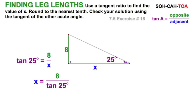So, normally we'd say we're done, but look at the next sentence. Check your solution using the tangent of the other acute angle. Well, that's this one right here. Well, the other acute angle, we know, is 65. Triangle sum theorem, of course, tells us that, you know, these two acute angles have to add up to 90.